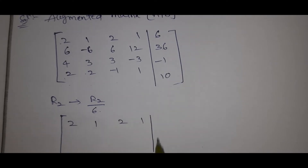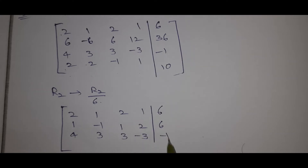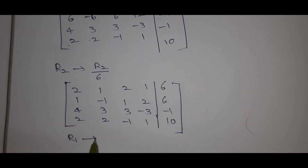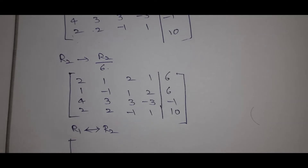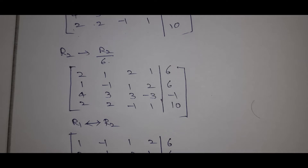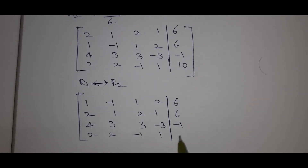After interchanging R1 and R2, the new matrix becomes: Row 1: 1, -1, 1, 2 | 6; Row 2: 2, 1, 2, 1 | 6; Row 3: 4, 3, 3, -3 | -1; Row 4: 2, 2, -1, 1 | 10.